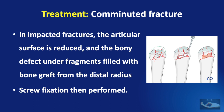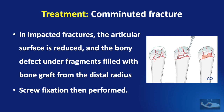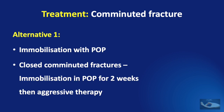Depending on the severity of comminution, ideal management may not always be possible. The basic principle of alternative methods is to provide traction to maintain the joint space, allowing healing of the articular surface so that full range of movements of the metacarpophalangeal joint can be achieved. The first alternative is immobilization with a POP slab — ideal for closed comminuted fractures — entailing immobilization for just two weeks followed by aggressive therapy to regain painless range of motion.